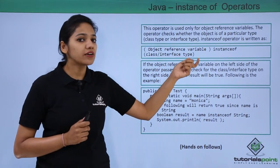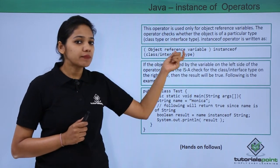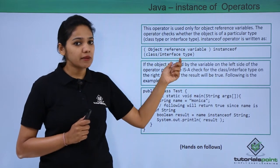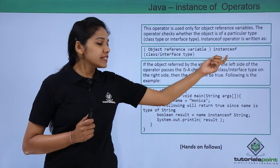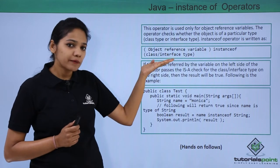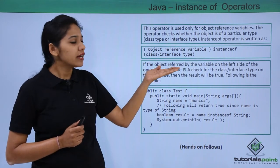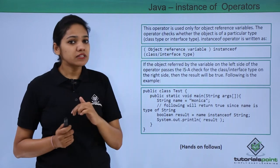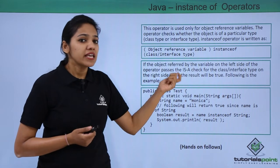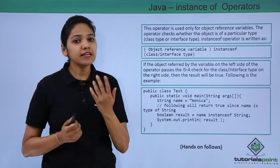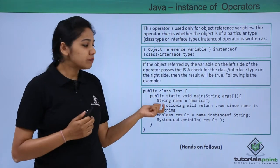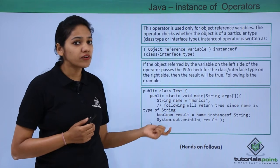Then we check whether that variable name is an instance of String type or not. The instanceof keyword checks whether an object reference variable is of that particular class or interface type. These instanceof operators are useful to check whether it passes an 'is-a' check relation — that is, whether one object reference type is compatible with another reference type or not.